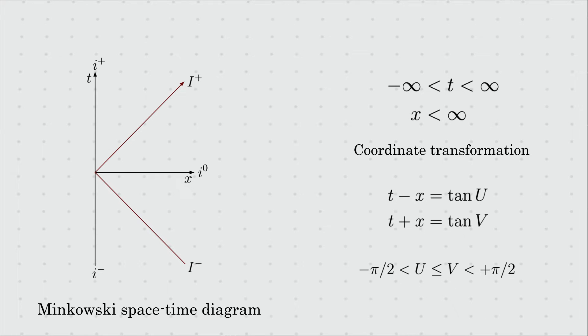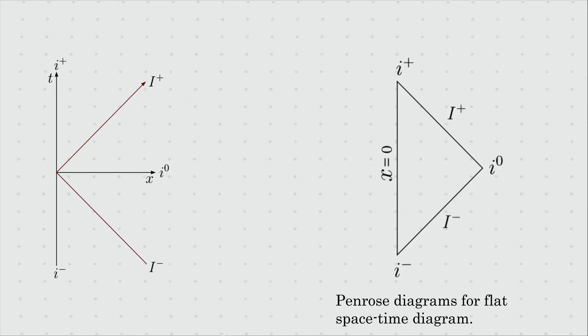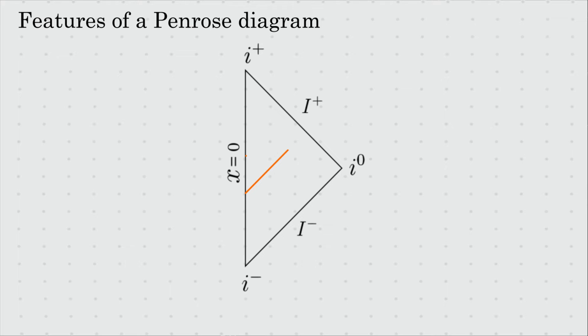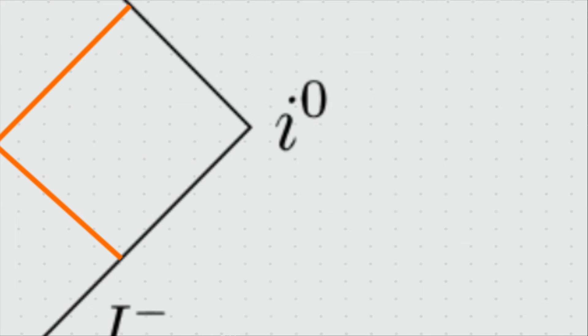This new coordinate ranges from minus π/2 to plus π/2, while our original range was all the way up to infinity. The shape of the region bounded by this boundary is indeed a triangle, with infinite space and time squeezed into a π/2 region. The path of light rays is always represented by 45-degree lines, making it easy to discern if two points are in causal contact. The corners of the triangle are future and past infinity, with i-plus and i-minus being time-like and i-zero being space-like.